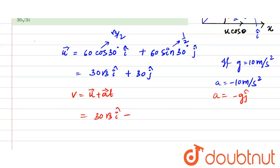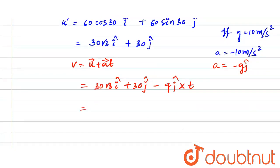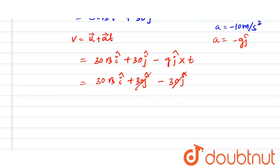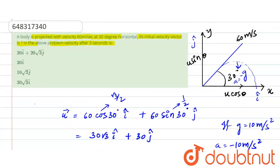Substituting t = 3 seconds: v = 30√3 î + 30 ĵ + (−10)(3) ĵ = 30√3 î + 30 ĵ − 30 ĵ. The ĵ components cancel, so the final velocity vector v = 30√3 î. Therefore, the velocity after 3 seconds is 30√3 î, which corresponds to option 4.